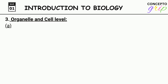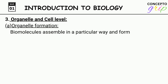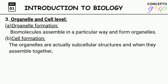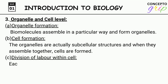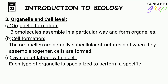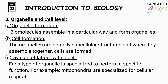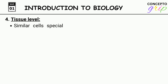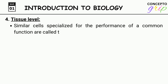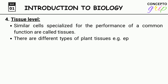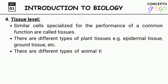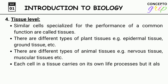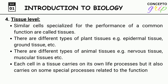Level 3 — Organelle and cell level. Biomolecules assemble in a particular way and form organelles. The organelles are subcellular structures, and when they assemble together, cells are formed. Each type of organelle is specialized to perform a specific function — for example, mitochondria are specialized for cellular respiration, and ribosomes are specialized for protein synthesis. Level 4 — Tissue level. Similar cells specialized for the performance of a common function are called tissues. There are different types of plant tissues, e.g., epidermal tissue, ground tissue. There are different types of animal tissues, e.g., nervous tissue, muscular tissue. Each cell in a tissue carries on its own life processes but also carries on special processes related to the function of the tissue.